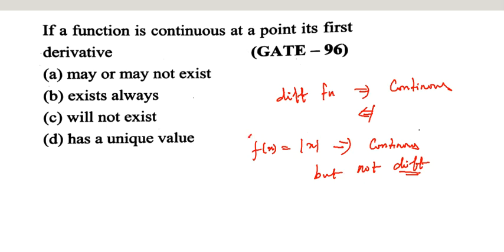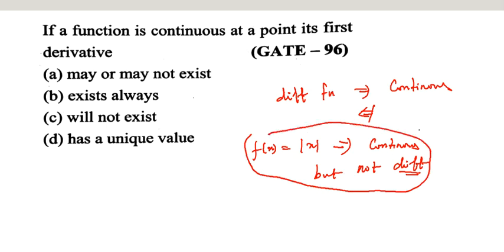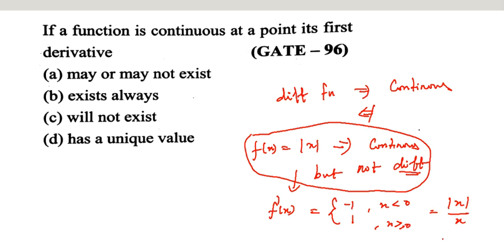Using this example, the derivative of |x| is: -1 if x < 0, and 1 if x ≥ 0, which can be written as |x|/x. The differentiation of |x| is |x|/x. This is not differentiable at x = 0. So the correct answer is: a function is continuous at a point, but its first derivative may or may not exist.